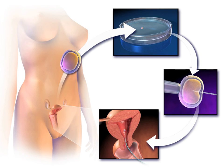A pre-implantation genetic diagnosis (PGD) procedure may be conducted on embryos prior to implantation as a form of embryo profiling, and sometimes even on oocytes prior to fertilization. PGD is considered in a similar fashion to prenatal diagnosis. When used to screen for a specific genetic disease, its main advantage is that it avoids selective pregnancy termination, as the method makes it highly likely that the baby will be free of the disease under consideration.